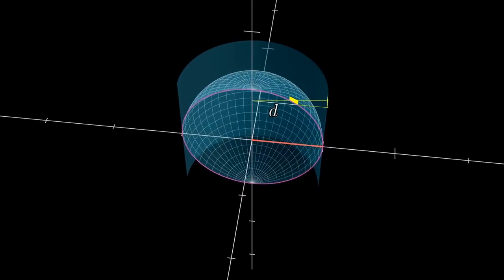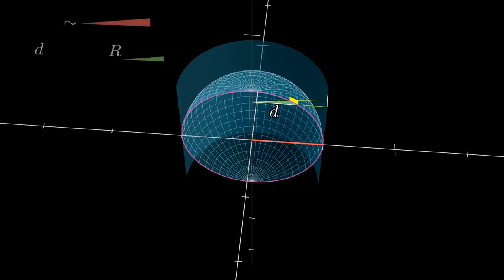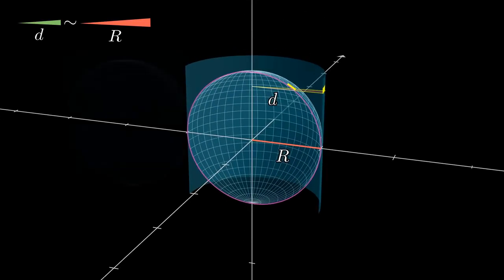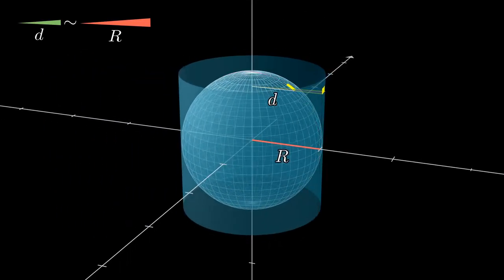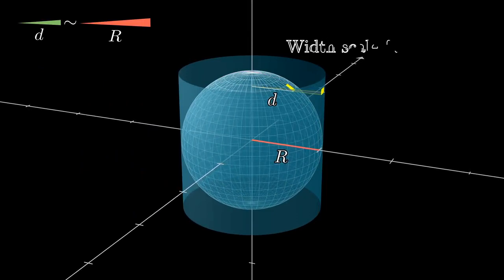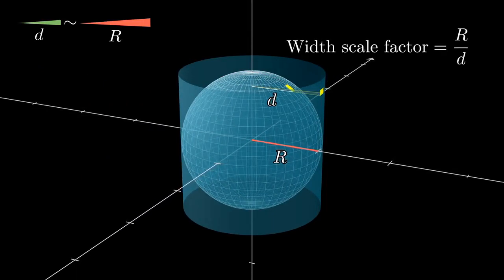Now to think about projecting this out to the cylinder, what we're going to do is picture two similar triangles. The first one shares its base with the base of the rectangle on the sphere, and has a tip at the same height but on the z-axis, a distance d away. The second triangle is a scaled-up version of this, scaled so that it just barely reaches the cylinder, meaning its long side now has a length r. So the ratio of their bases, which is how much our rectangle's width gets stretched out, is r divided by d.